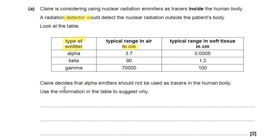Claire decides that alpha emitters should not be used as tracers in the human body. Use the information in the table to suggest why. This is a 'suggest' question rather than a recall question.